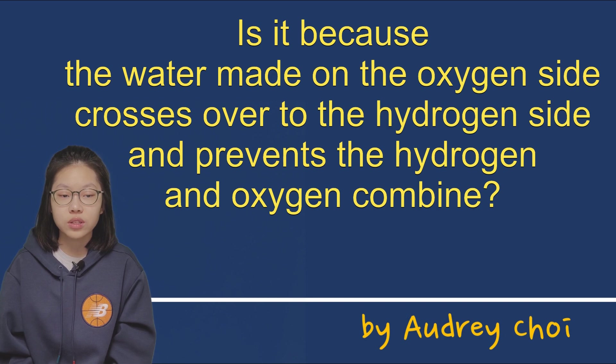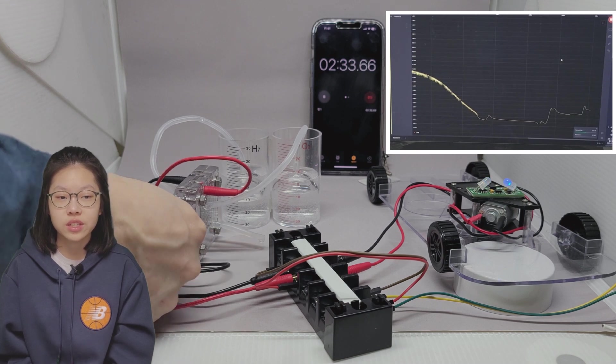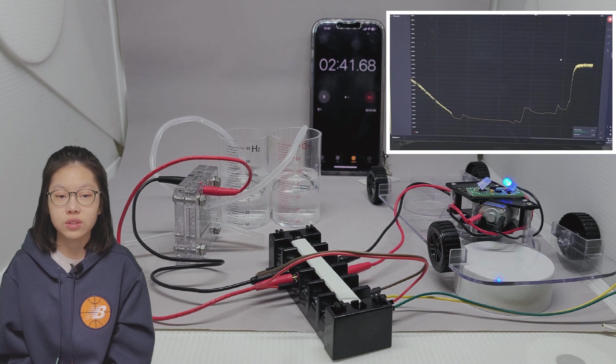This time, I will also open the lower exit on the hydrogen side. As soon as I open the cap, electricity starts to be made. Water droplets fall from the lower outlet on the hydrogen side.